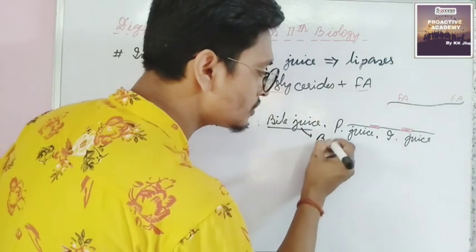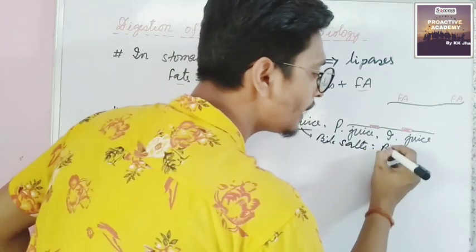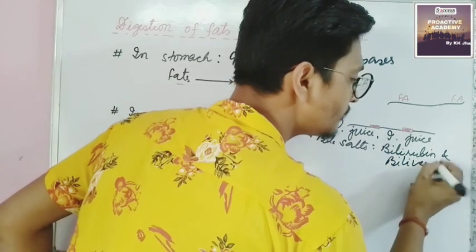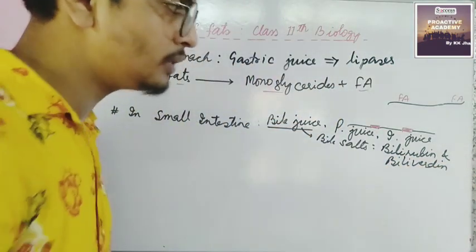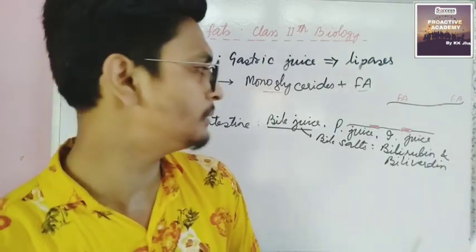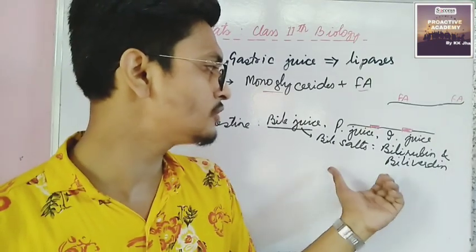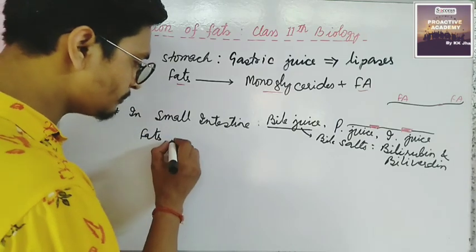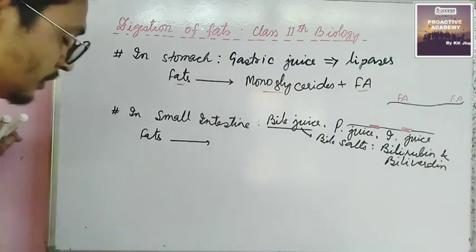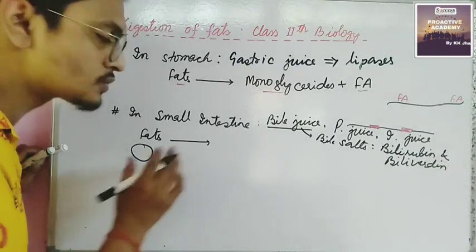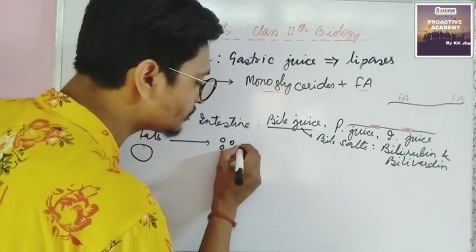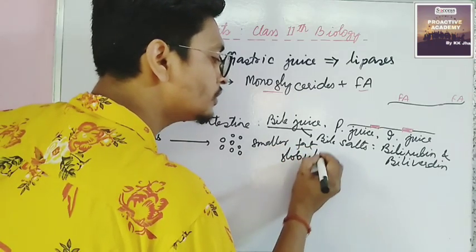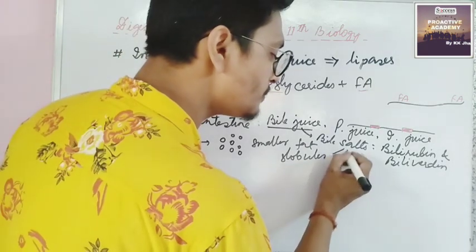Bile juice contains bile salts, along with bilirubin and biliverdin pigments. With the help of these bile salts, fats — large fat molecules — will be broken down into smaller fat globules by the action of bile salts.